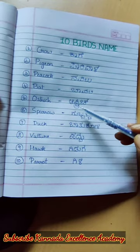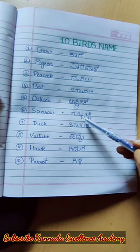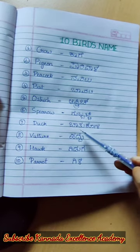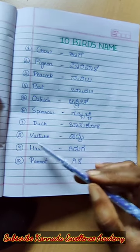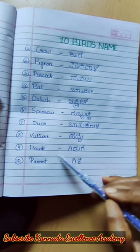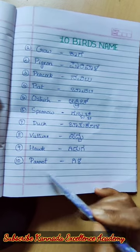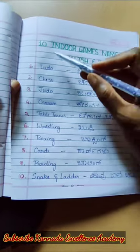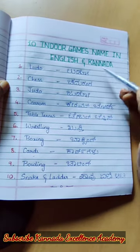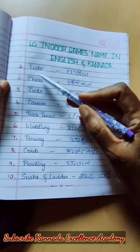Ostrich. Sparrow — Gubbachi. Duck — Bhatukoli. Vulture — Haddu. Hawk — Giduga. Parrot — Gilly.